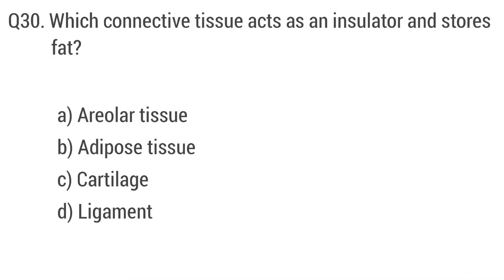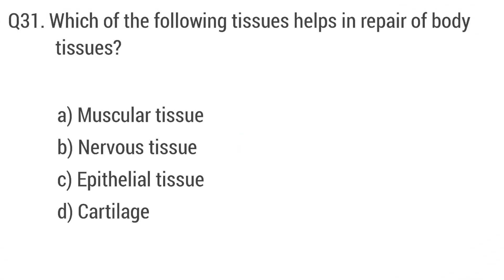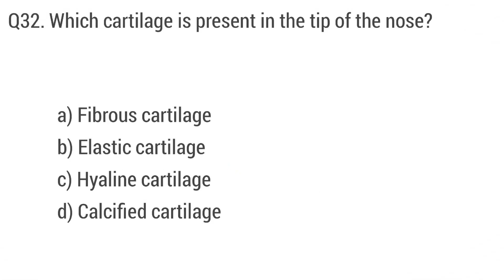Question 30: Which connective tissue acts as insulation and stores fat? Question 31: Which of the following tissue helps in repair of body tissues? The right answer is option C: epithelial tissue. Question 32: Which cartilage is present in the tip of the nose? The right answer is option C: hyaline cartilage.